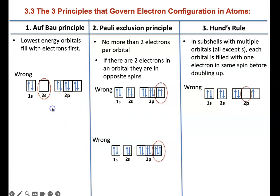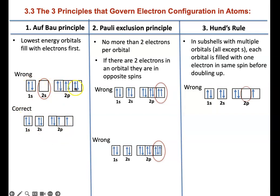Here is how you correct it. There are one, two, three, four, five, six, seven, eight electrons. Two of these electrons will go into the s orbital, and you put the remaining four into the p subshell. That is how you correct this one.